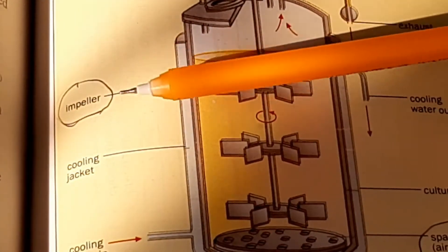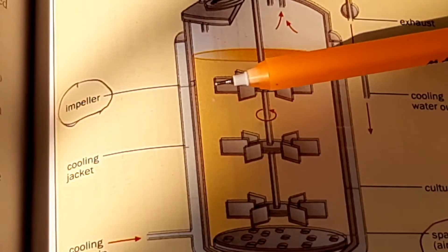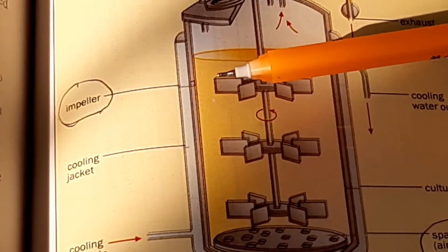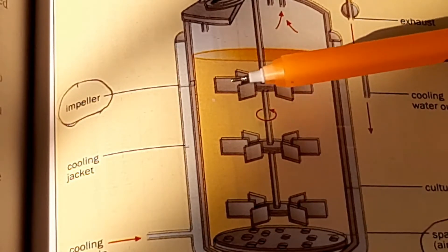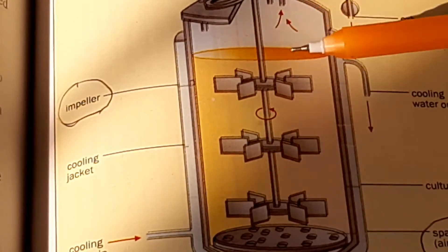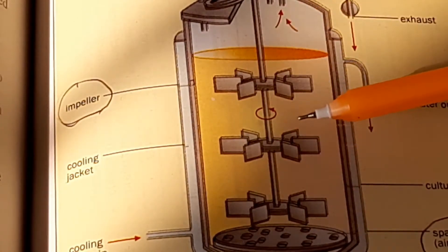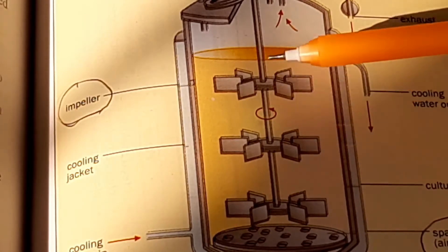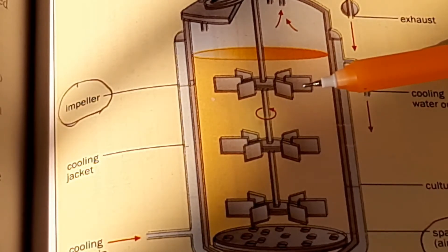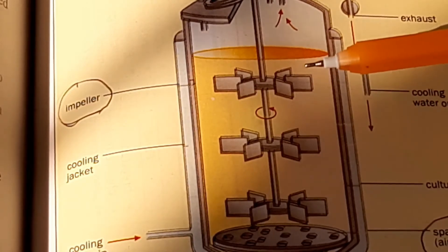This is the impeller, a stirring device. It mixes the air bubbles with the nutrient broth, ensuring that oxygen and nutrients are well within reach of the microbes. Microorganisms are mixed with nutrient broth and culture medium inside the cylinder, where oxygen concentration, pH, temperature, and concentration of nutrients are carefully monitored by computer.